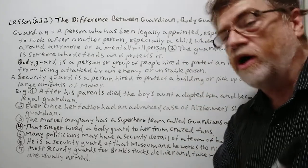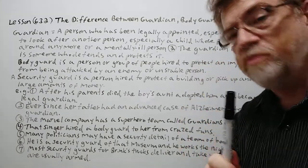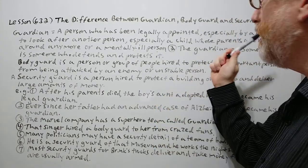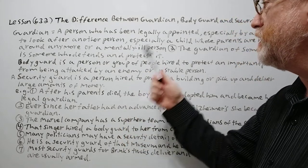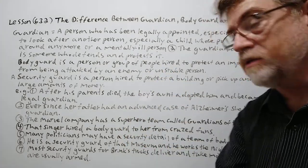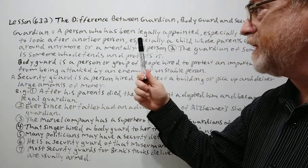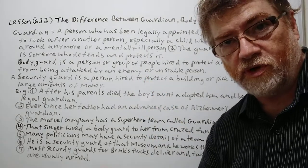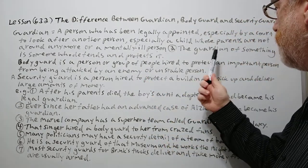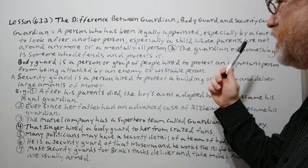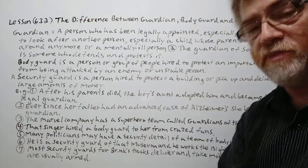First we start with guardian. A person who has been legally appointed, especially by a court, to look after another person — especially a child whose parents are not around anymore, or a mentally ill person. That's the first meaning. We got a second meaning for guardian: the guardian of something is someone who defends and protects it.